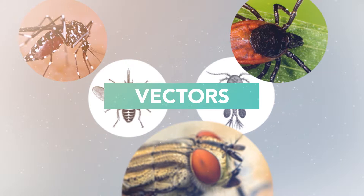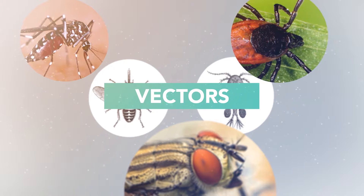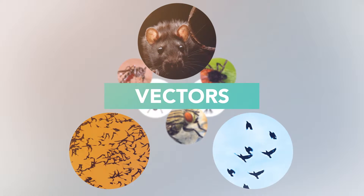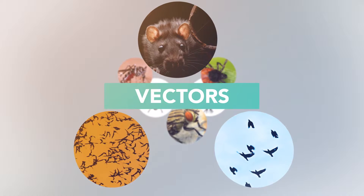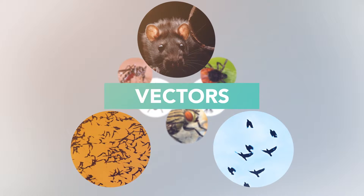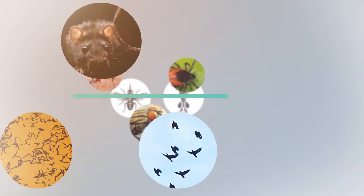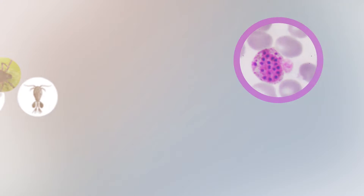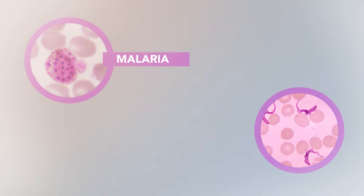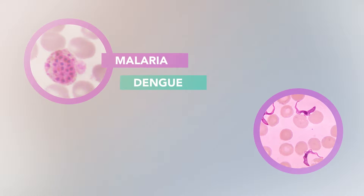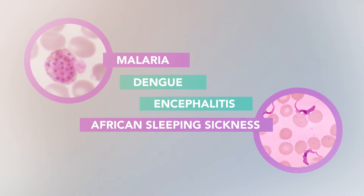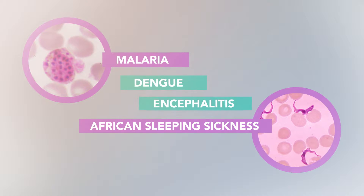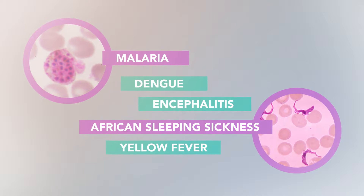Other non-arthropod vectors can include rodents such as rats, certain bats, and several species of wild birds. Different vectors carry different diseases such as malaria, dengue, encephalitis, African sleeping sickness, and yellow fever.